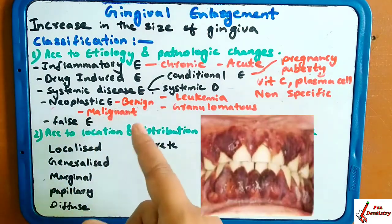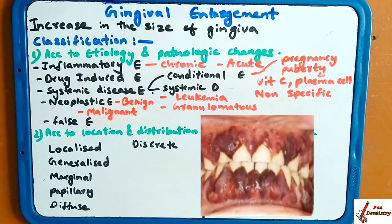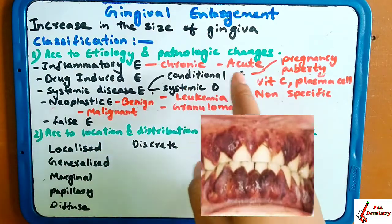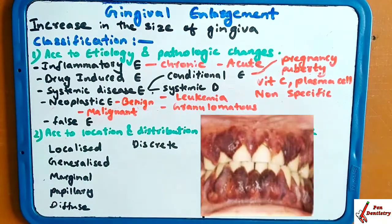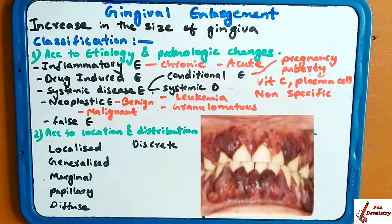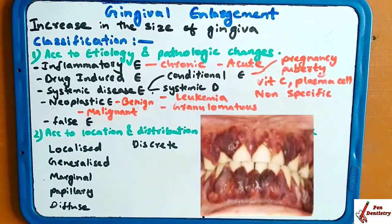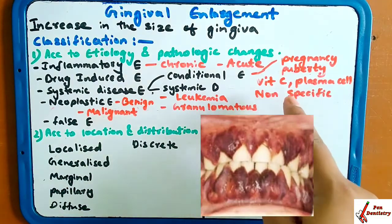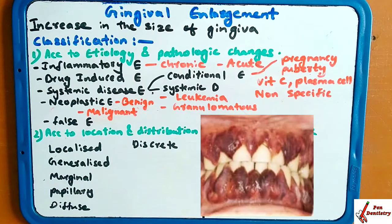The next type is systemic disease enlargement. If a patient has a systemic disease and because of that the gingival enlargement takes place, this can be of two types: conditional and systemic. Conditional includes conditions occurring during pregnancy, puberty, vitamin C deficiency, plasma cell changes, and non-specific conditional enlargement.